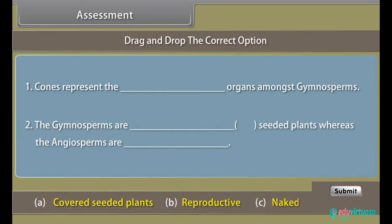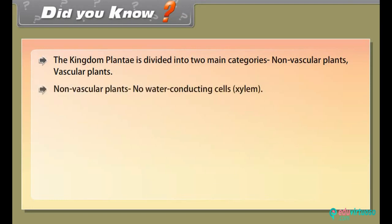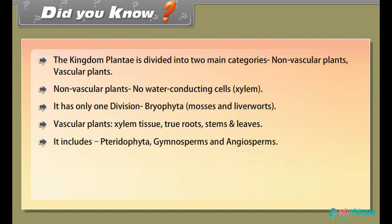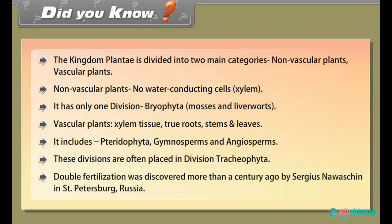Before proceeding further, let us know how much you have learned — drag and drop the correct options. Did you know? The kingdom Plantae is divided into two main categories: non-vascular plants and vascular plants. Non-vascular plants have no water-conducting cells (xylem) and include only one division, bryophyta — mosses and liverworts. Vascular plants have xylem tissue, true roots, stems, and leaves, and include pteridophyta, gymnosperms, and angiosperms, often placed in division Tracheophyta. Double fertilization was discovered more than a century ago by Sergius Navashchin in St. Petersburg, Russia.